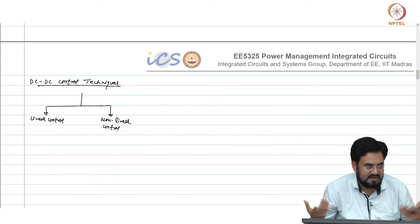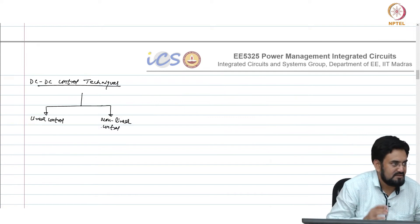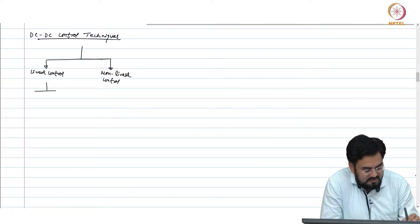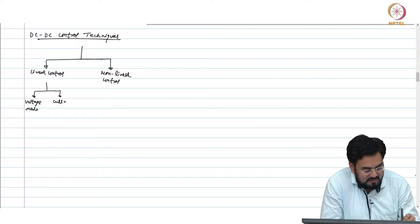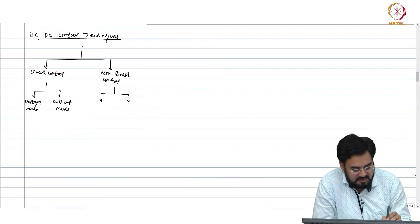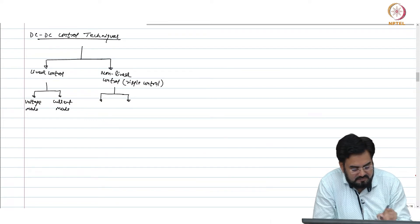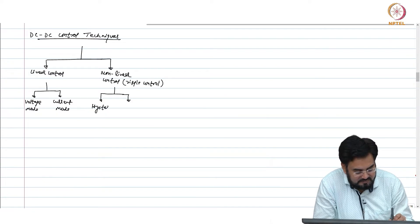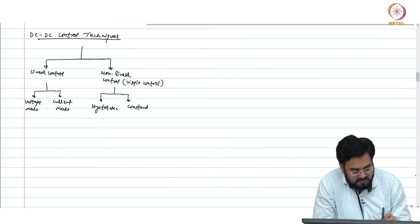Otherwise we could have achieved the same voltage simply by feeding a fixed duty cycle. So, linear control — this is your voltage mode or current mode. The other type is mostly based on ripple, and it is also called ripple control, with hysteretic constant on or off time.